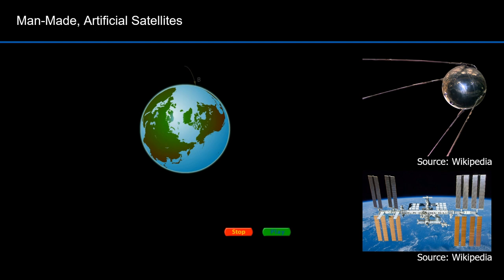Much of what we use orbital dynamics for deals with man-made satellites. The pictures on the right are man-made satellites. Sputnik on the top, the first man-made satellite to orbit the Earth, and the International Space Station on the bottom. Probably the biggest thing we've ever put in orbit.